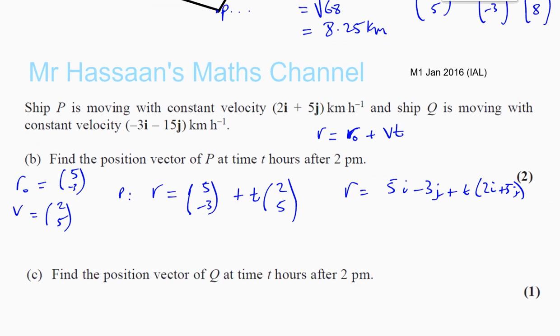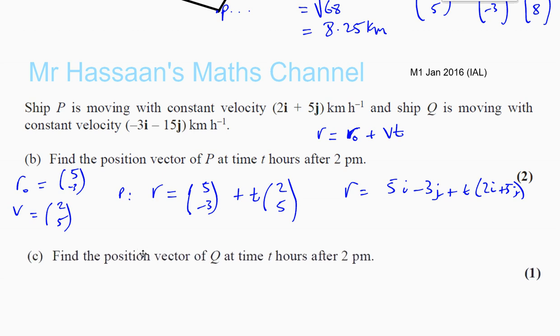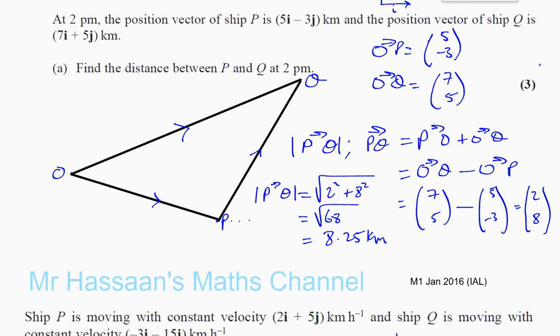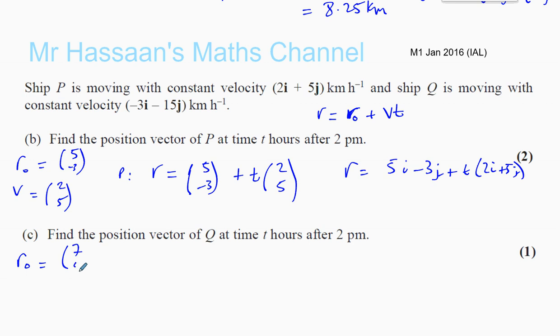For Q, you do exactly the same principle. For part C, Q, we know that r0 for Q, its initial position was 7i plus 5j, so 7 and 5. And we know the velocity vector for Q is minus 3 minus 15. So the position vector for Q is going to be given by 7, 5 plus time t times minus 3 and minus 15.